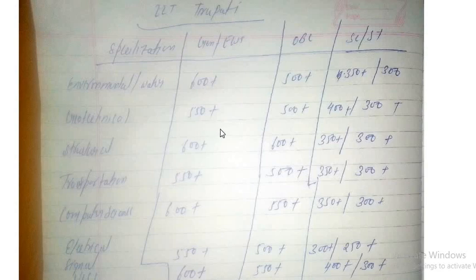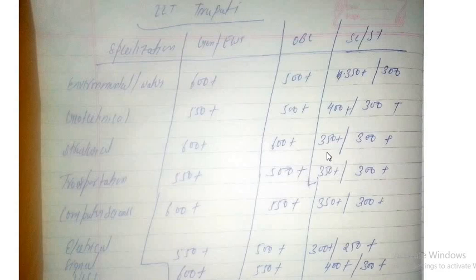For Geotechnical Engineering: 550 plus general, 500 plus OBC, 400 plus SC/ST, and 300 for other categories. For Structural Engineering, the cutoff goes very high — everyone wants Structural. If you have a gate score of 650 you can apply; 600 plus you can also apply and take a risk. For OBC, 600 plus. For SC/ST, 300 to 400 plus. The SC/ST result varies depending on how many SC/ST students applied.